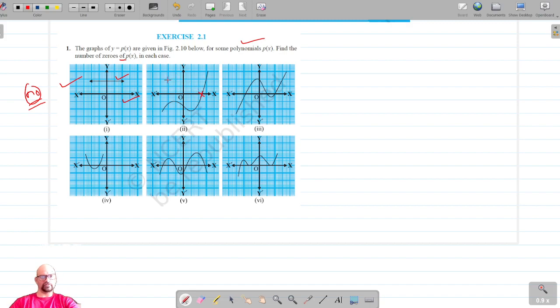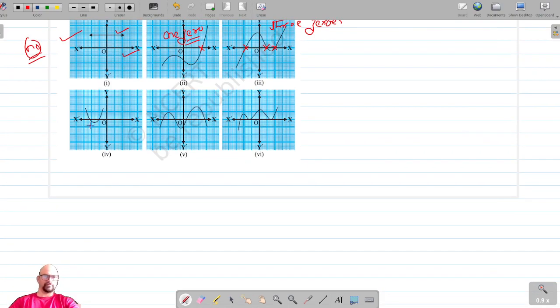So in this case we have one zero. For the third graph, the polynomial intersects the x-axis at one, two, and three points, so we have three zeros in this case.